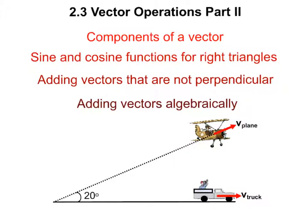Hello physics students and welcome to section 2.3. We're going to continue looking at vector operations and discuss more aspects of that. Here are the items we're going to look at: components of a vector, sine and cosine functions for right triangles, situations where our vectors are not perpendicular, and how to add those vectors algebraically.